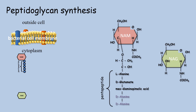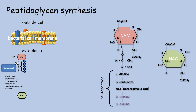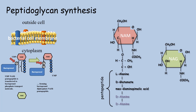These peptidoglycan monomers are made inside the bacterial cell, inside the cytoplasm. As soon as NAM is made, it binds to a molecule of UDP — uracil diphosphate — which in turn will link to a transmembrane carrier molecule called bactoprenol. Notice that bactoprenol brought with it one phosphate group and gained a second one when it bound to NAM. This will be very important when we discuss bacitracin's effect on peptidoglycan synthesis.